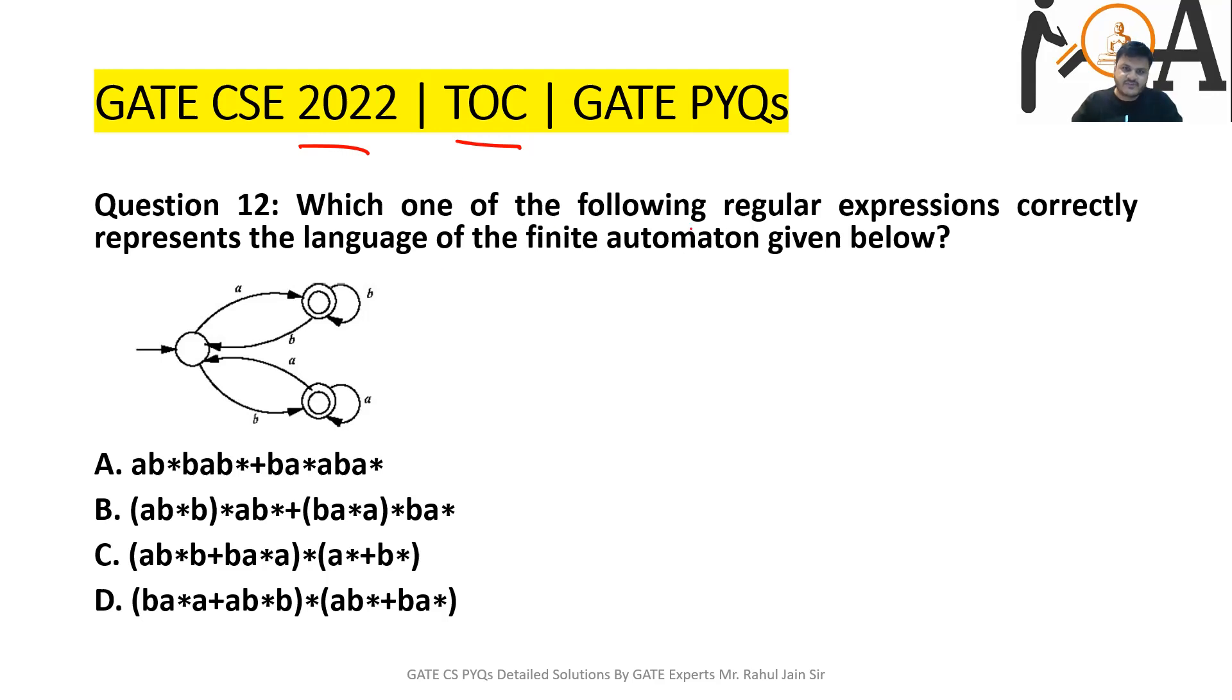The question is: which one of the following regular expressions correctly represents the language of the finite automaton given below? The finite automaton is given to us and we have to find which of the following is correct out of A, B, C, D. It was asked as an MCQ question for one mark.